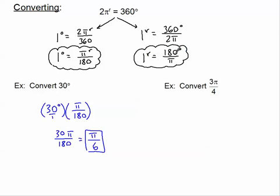How I like to remember this is if I'm going from radians to degrees, the radian has a π in the numerator, so I need to cancel that out with the π in the denominator. That's how I always remember to use this one.